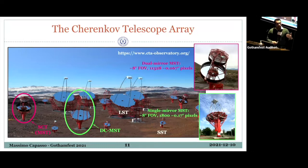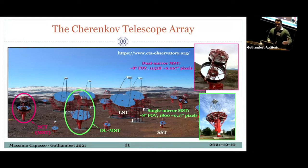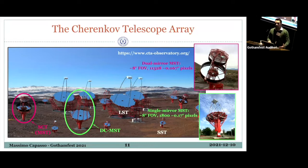What we do with current-generation and next-generation experiments like CTA is detect gamma rays indirectly on the ground through the Cherenkov light emitted in gamma-ray-induced electromagnetic showers. You need huge optical reflectors and nanosecond-fast electronics to catch it because it's a very fast pulse of light. CTA will deploy two arrays, one in the northern and one in the southern hemisphere, for full sky coverage, and will employ telescopes of different sizes to dramatically expand the energy coverage.